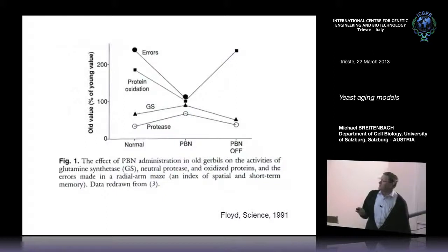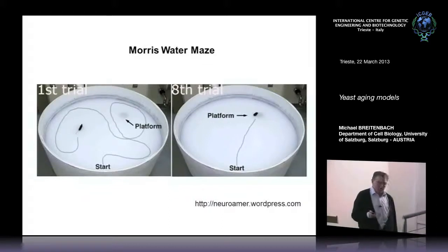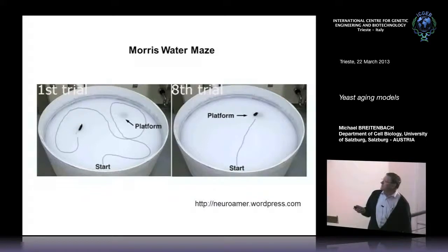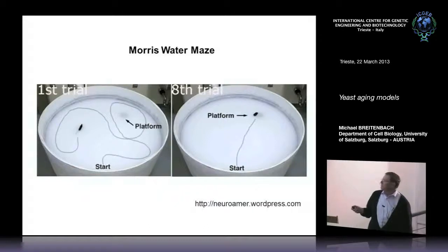This is from the Science paper where this was first reported, showing how you perform such experiments with mice. There is a platform under the surface which the mouse cannot see. In the first trial, the mouse swims around and doesn't find it, but after eight trials it goes directly to the platform. The old mouse has lost memory and is very bad at this, but after treatment with the spin trap it becomes very good again.